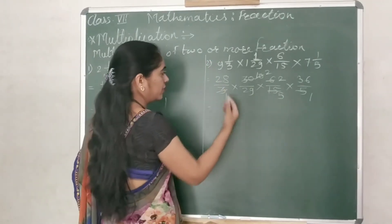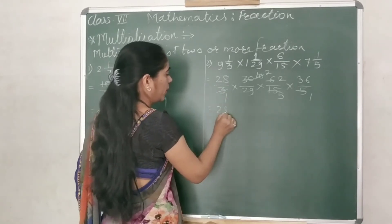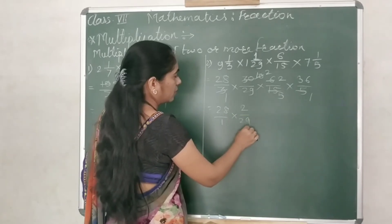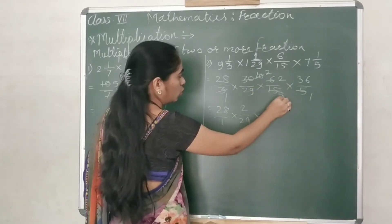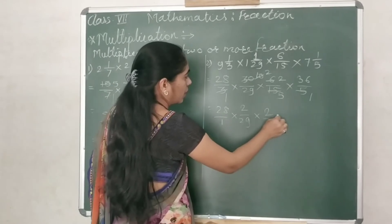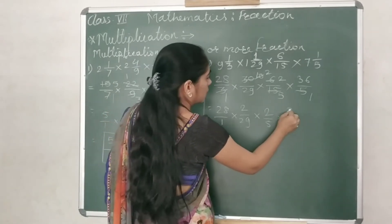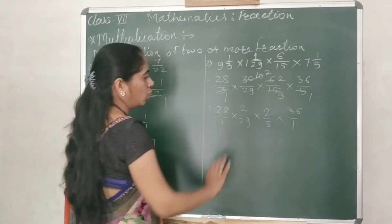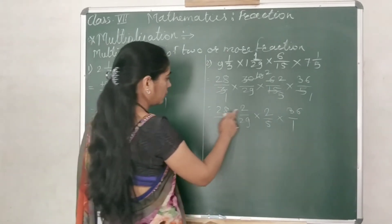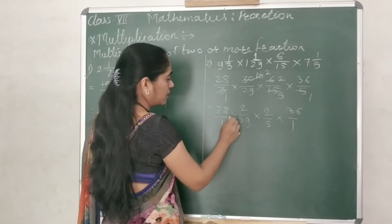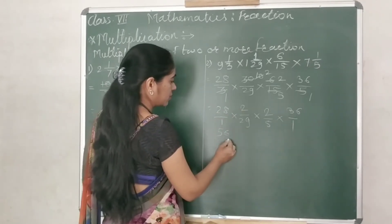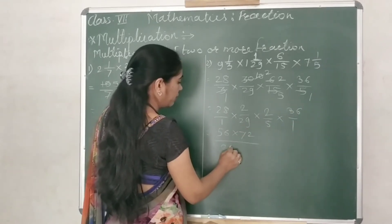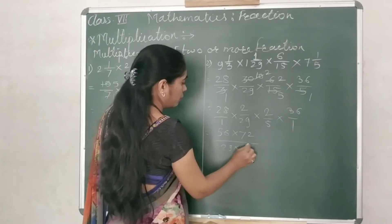Now we have got 28 upon 1 multiplied by 2 upon 29 multiplied by 2 upon 5 multiplied by 36 upon 1. Now you have to multiply all this.